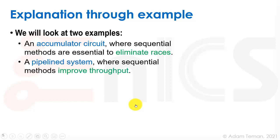The other example is a pipeline system where sequential methods are used to improve throughput. So this is very common to pipe things in order to improve throughput. And this is another common method that we'll find. But it's not essential such as doing the race elimination through synchronization.